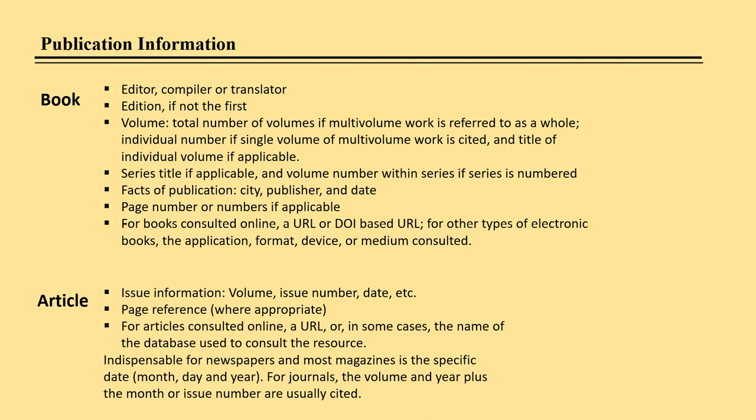Article publication information also includes the name of the journal, magazine, or newspaper publishing the article, as well as a volume and issue number, and page numbers of the article. If the item is accessed electronically, include the URL or DOI. If the item is from a library subscription database, the name of the database is necessary. And don't forget to use the permalink URL.